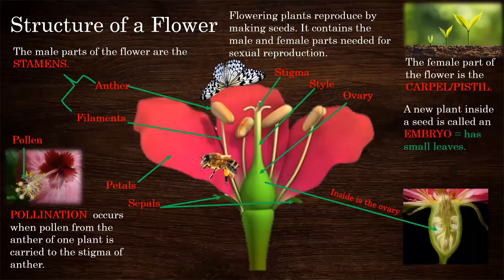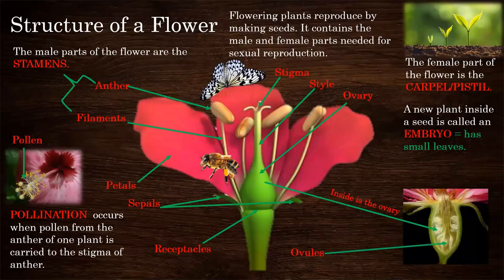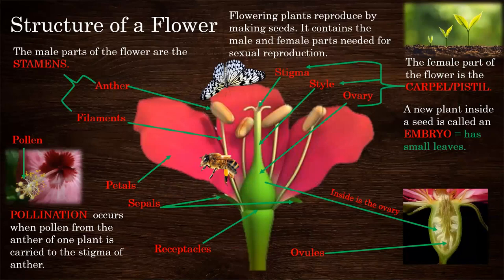A new plant inside a seed is called an embryo. The embryo has small leaves. The receptacles and ovules are found inside the ovary of a flower. The parts of the carpel or pistil are the stigma, style, and ovary.